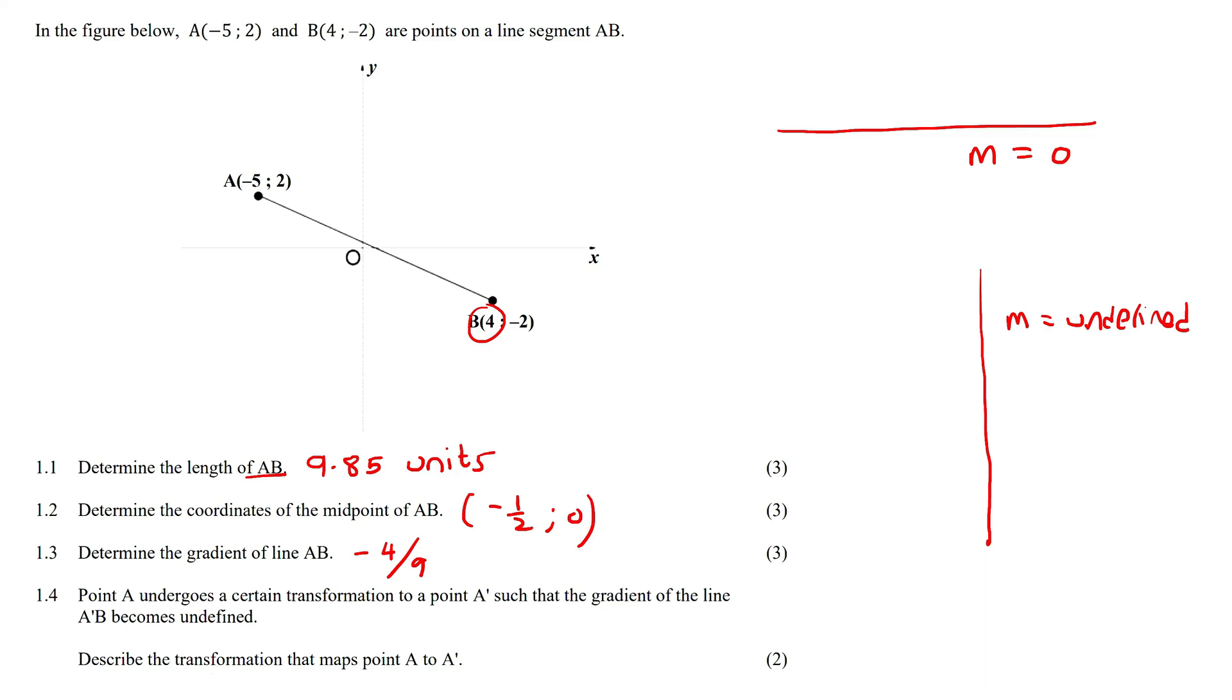That means this A is probably going to move somewhere over here, so maybe there, or it could even end up moving somewhere down here. So that when you connect A, the new A to B, just like they said, that gradient will be undefined - you see how it's a vertical line like that.